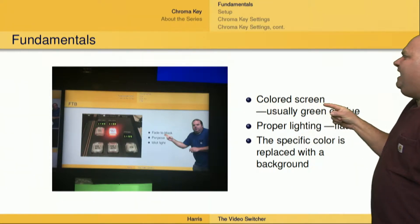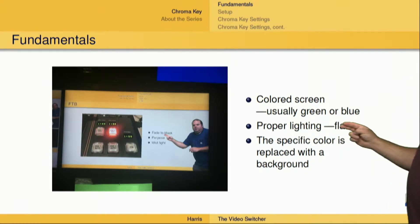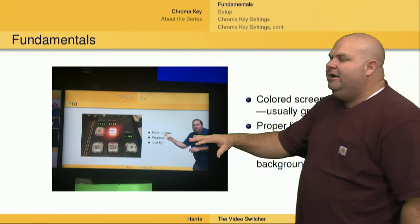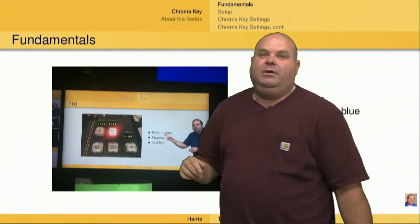First of all, you're going to have a colored screen. Usually that screen is going to be green or blue — in like 90% of the cases, it's going to be green or blue. You also want to make sure you've got proper lighting. With a chroma key, it's going to be flat lighting — you're going to bathe the entire area in light. What's going to happen with the chroma key is that green color is going to be replaced with some sort of background.